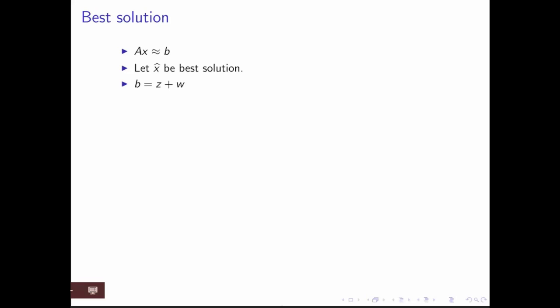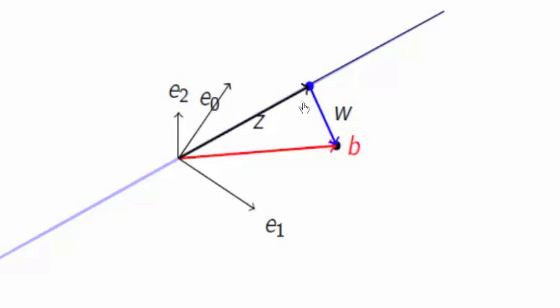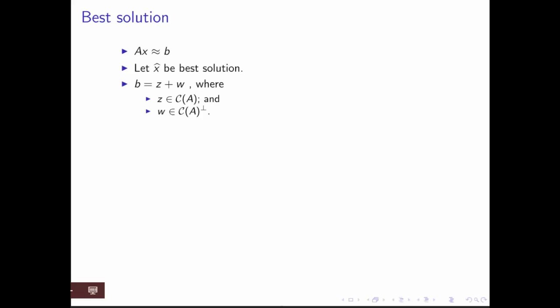What we just illustrated is that B can be written as the vector Z that is in the column space of A, plus a vector that's perpendicular to the column space of A. Z is in the column space of A. W is in the space perpendicular to the column space of A.